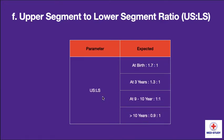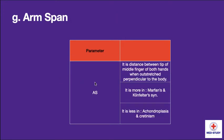Now coming to upper segment to lower segment ratio. At birth it is 1.7 to 1. At 3 years it becomes 1.3 to 1. At 9 to 10 years it becomes 1 to 1, and for more than 10 years it becomes 0.9 to 1. Now coming to arm span, which is the distance between the tip of the middle finger of both hands when outstretched perpendicular to the body. It is more in Marfan syndrome and Klinefelter syndrome. It is less in achondroplasia and cretinism.